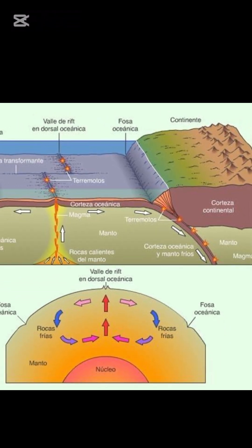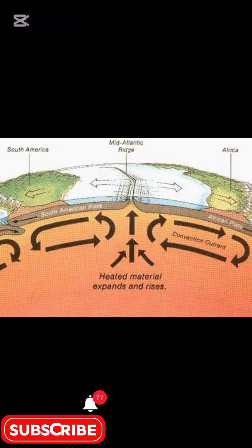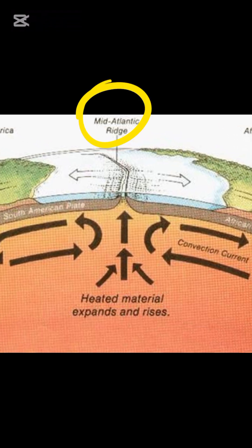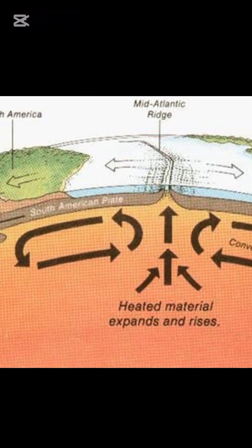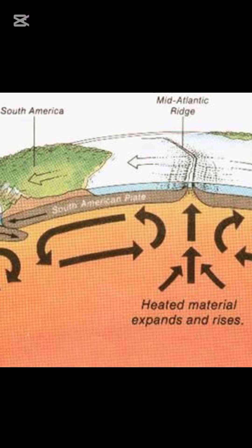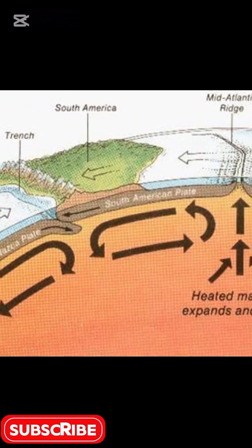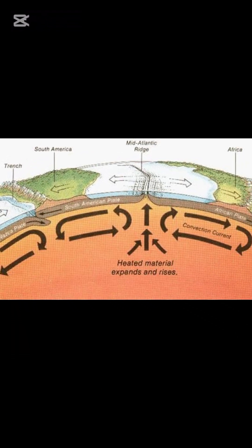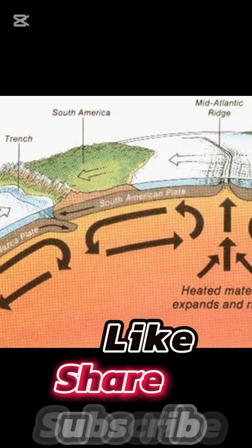The earth's crust is divided into several tectonic plates, including oceanic and continental plates. At divergent plate boundaries, like the mid-ocean ridge, magma rises to form new crust. At convergent plate boundaries, one plate can subduct beneath another, leading to the formation of volcanic arcs and deep ocean trenches.